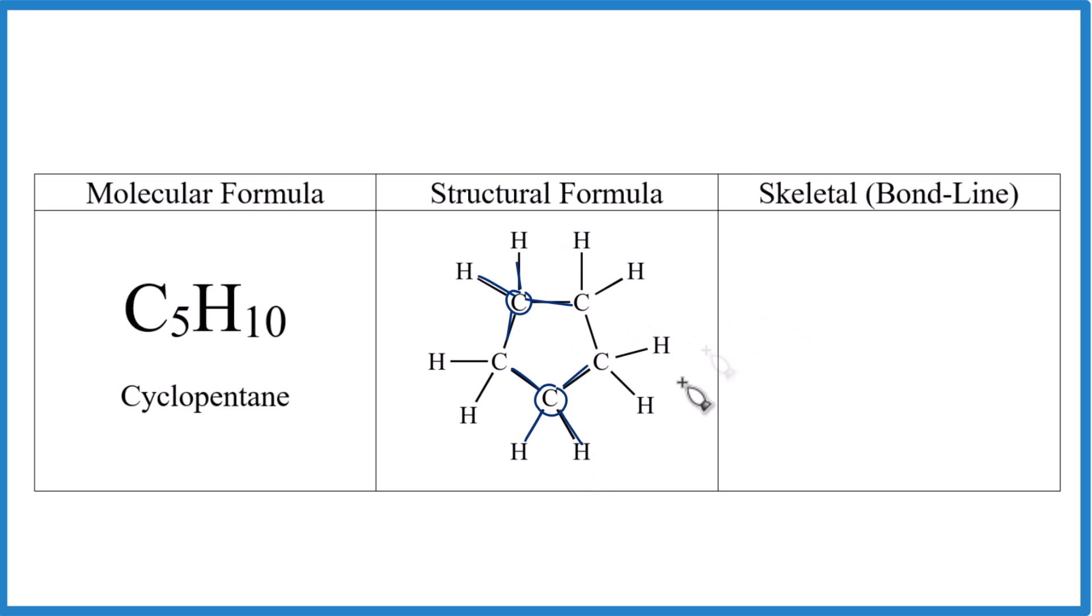It's an alkane here. They're all single bonds. So this is our structural formula for cyclopentane, C5H10, because we have carbons and hydrogens. They're all showing, and it gives us an idea of how the carbons and hydrogens are arranged.